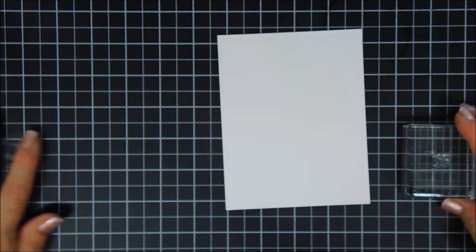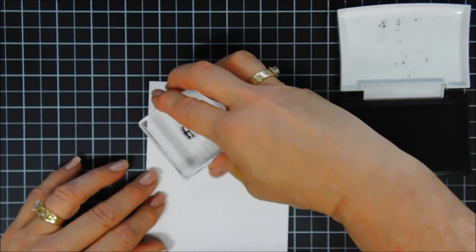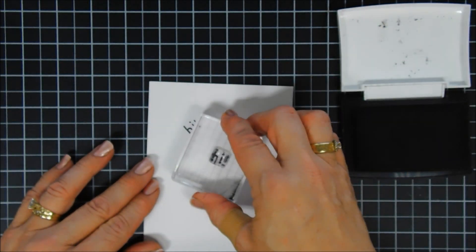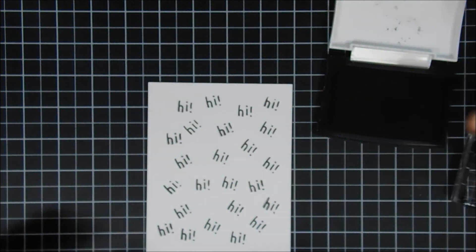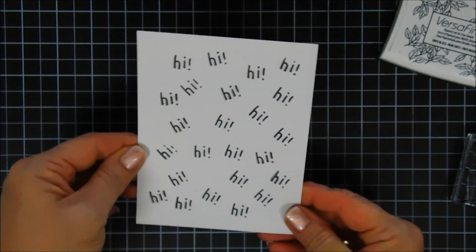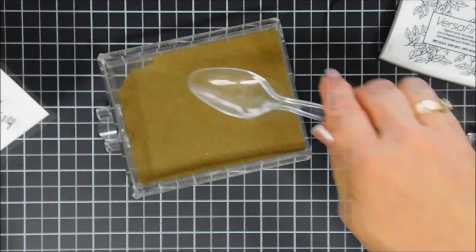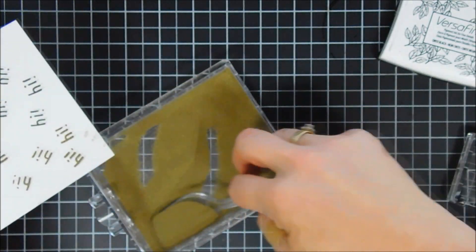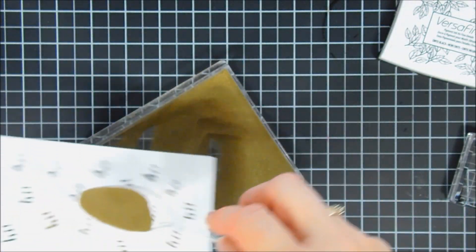And so I'm taking the sentiment that says 'hi,' and I'm stamping it all over my background, kind of wonky all over. And as I look at it now, after I stamped the word 'hi,' I have a tendency to tilt towards the right. So most of them are actually tilted towards the right.